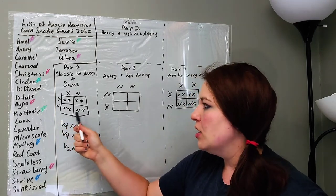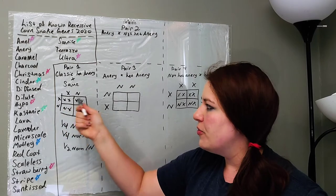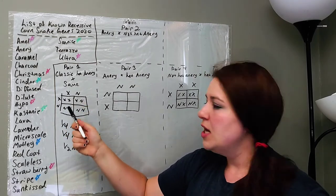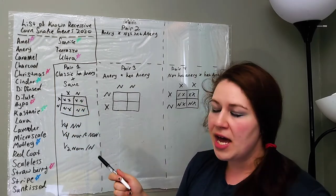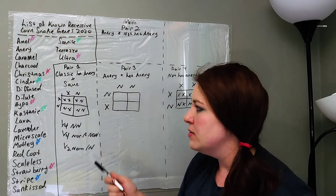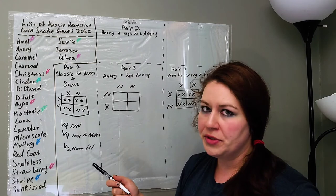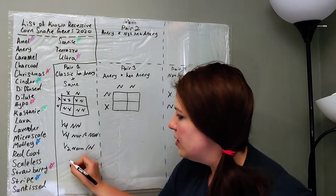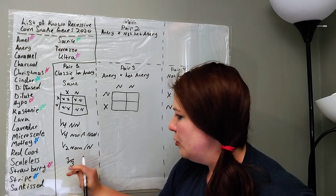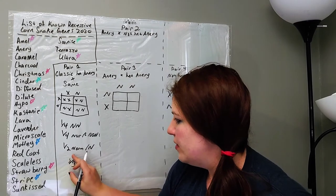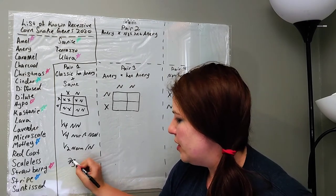So, as you can see here, we have three sets of normals here, and one set is not het anery. So, this simply means that two out of the three sets of normals are going to be het anery. Two out of three, not three out of three. That defeats purpose. Two out of three.